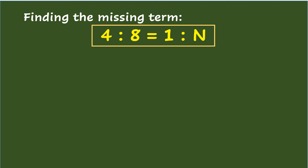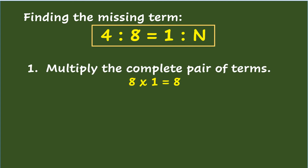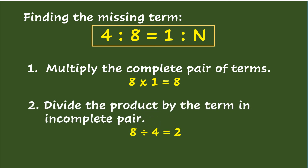There are times that a term in a proportion is missing. To find the missing term in colon form, like 4 is to 8 equals 1 is to n: first, multiply the complete pair of terms — the means, which are 8 and 1 — giving 8 times 1 equals 8. Second, divide the product by the term in the incomplete pair: 8 divided by 4 equals 2. So the missing term is 2.